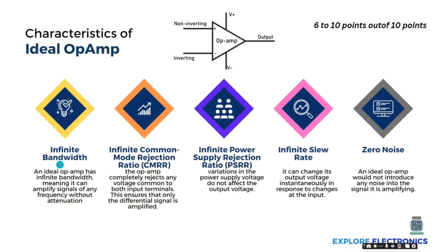The next characteristic is infinite bandwidth. An ideal op-amp will amplify all frequencies of the input coming from the inverting or non-inverting terminal. It will not restrict frequencies to any limit — there will be no limit for the frequency of signals coming as input. That is why we say the bandwidth of the ideal op-amp is infinite.